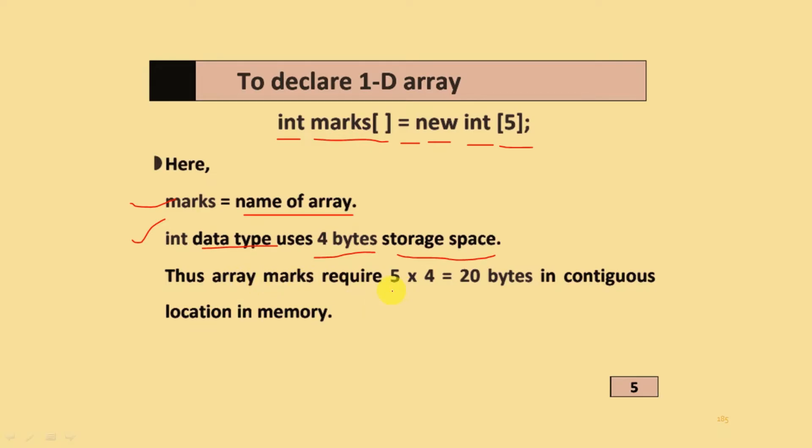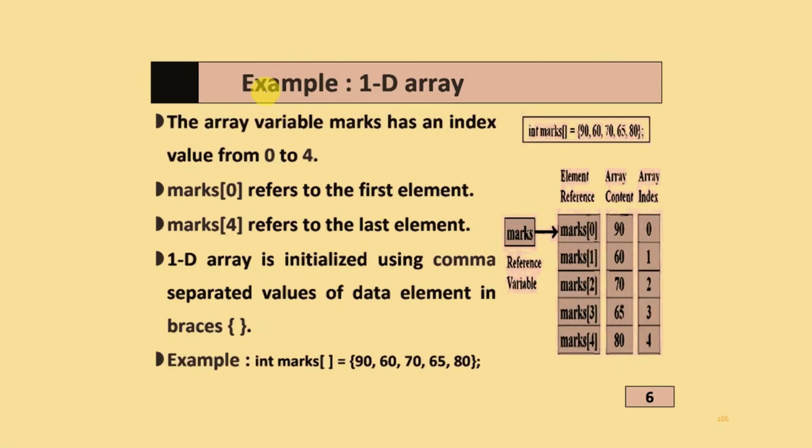The array marks requires 5 by 4, which is 20 bytes in continuous location in memory. This is the one dimension example. The array variable marks has an index value from 0 to 4. marks[0] refers to the first element.